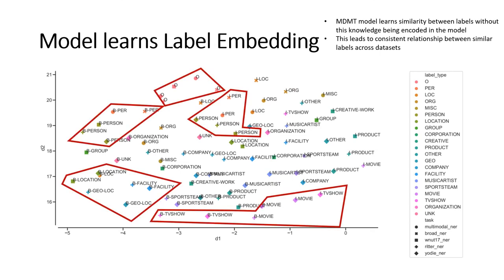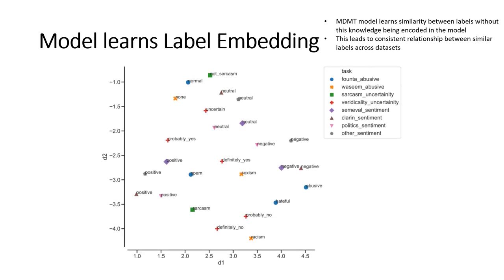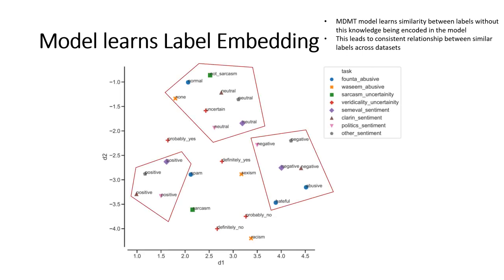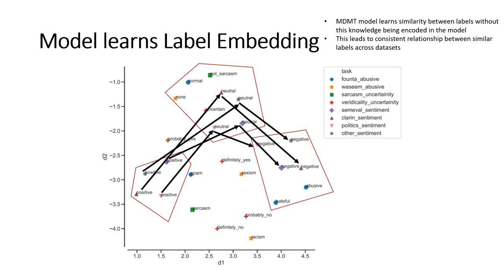Also, the label embeddings capture the direction going from the beginning of a label span to inside of the label span. For classification tasks, the labels across tasks are also clustered semantically, and the label embeddings capture a direction across positive, neutral, and negative style labels.